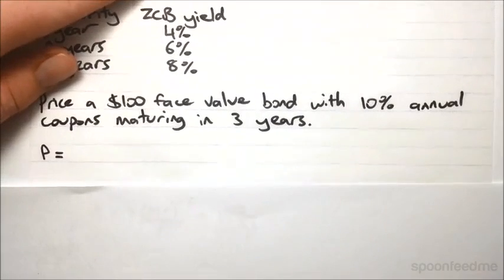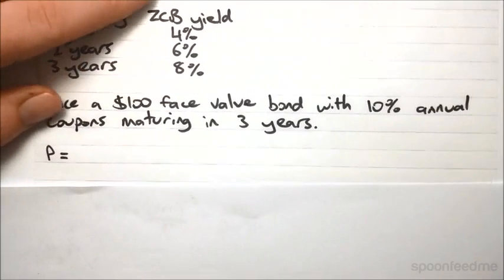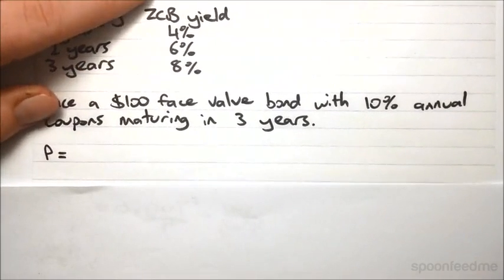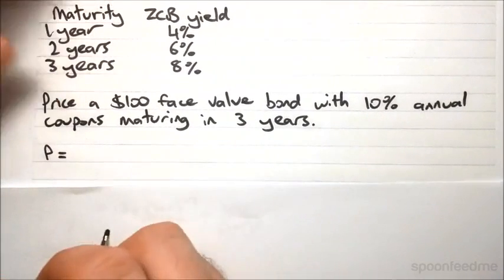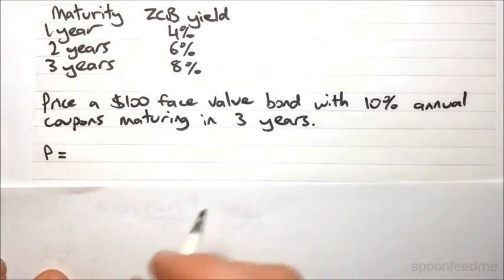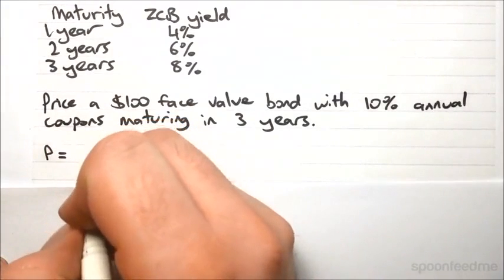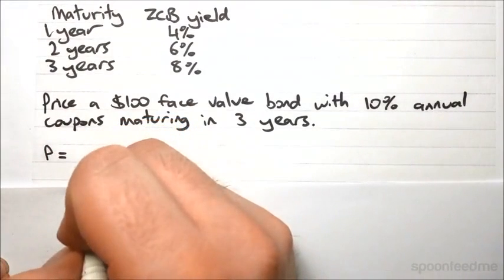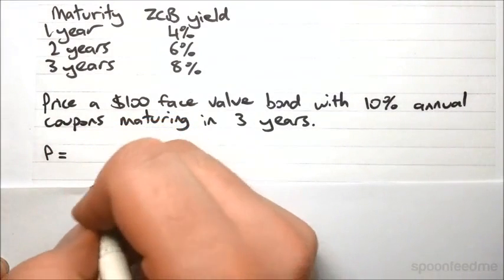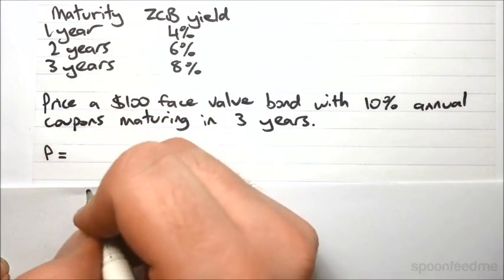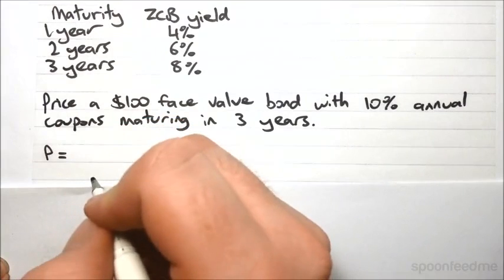So we've got P is equal to... and how do we price a zero-coupon bond? Well, quite simply, we take the face value...